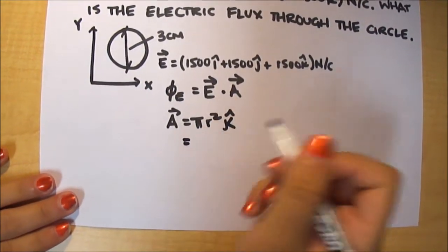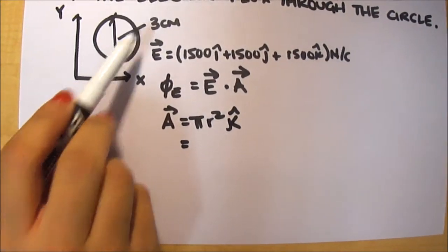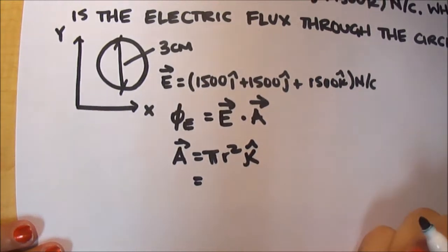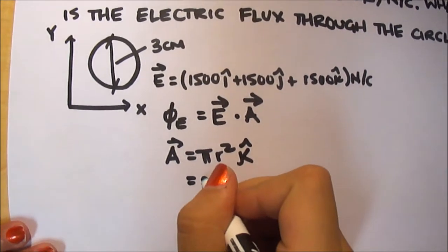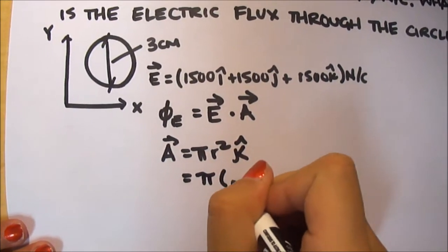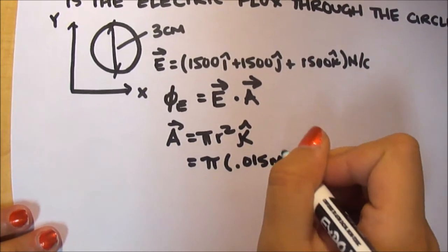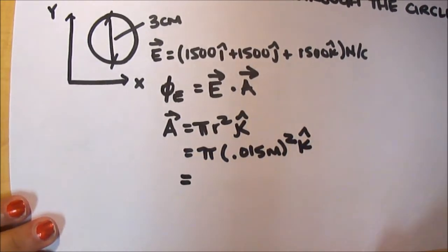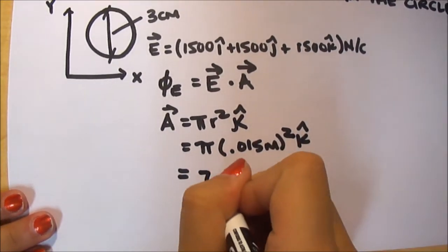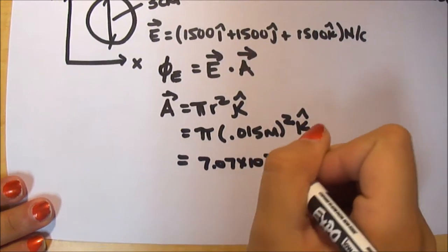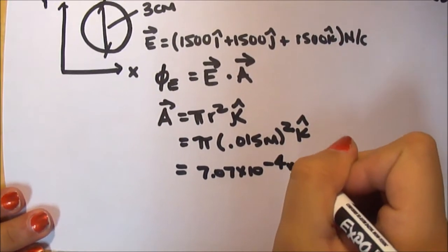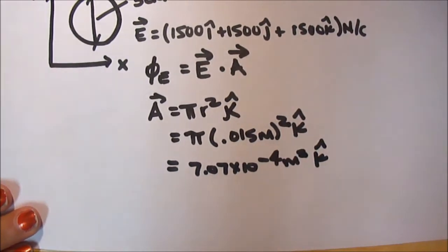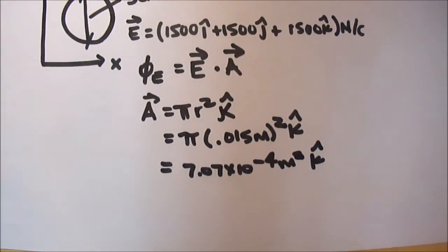Our r is going to be half of our diameter, which is 3 centimeters. We have to change the centimeters to meters first, so our radius should be 0.015 meters, which should result in 7.07 times 10 to the negative 4th meters squared k-hat.